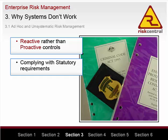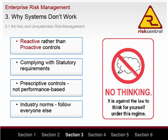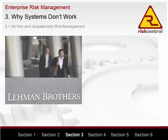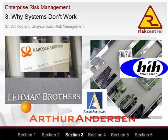Other unsystematic approaches include: complying with statutory requirements — that is, relying on government to tell you how to manage your risks; relying on prescriptive controls rather than performance-based controls; and industry norms — doing what everyone else is doing, thinking that you can't get into too much trouble if you are doing what everyone else is doing. The reliance on these approaches leads to ad hoc, fragmented and ineffective risk management processes that underestimate some of the biggest risks to business and overestimate others.